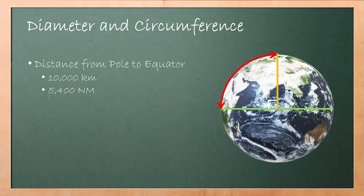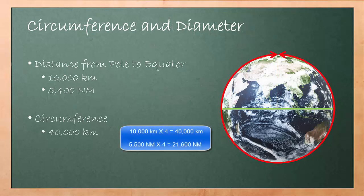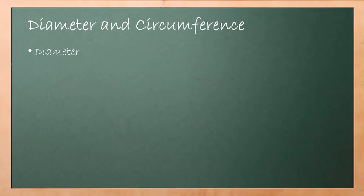As mentioned earlier, earth can be considered as a sphere for navigation purposes. Thus, the circumference of the earth is approximately 40,000 kilometers or 21,600 nautical miles. Because the earth can be considered as a sphere, to calculate the diameter of the earth, we can use circumference formula.